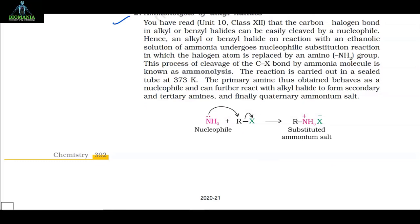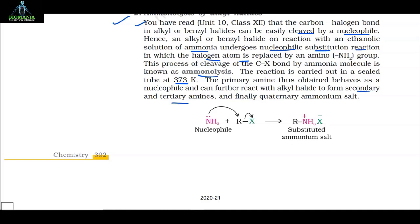Method 2: Ammonolysis of alkyl halides. The carbon-halogen bond in alkyl or benzyl halides can be easily cleaved by a nucleophile. Hence, an alkyl or benzyl halide on reaction with an ethanolic solution of ammonia undergoes nucleophilic substitution, in which the halogen atom is replaced by an amino group. This process is known as ammonolysis and is carried out in a sealed tube at 373 K. The primary amine thus obtained can further react with alkyl halide to form secondary and tertiary amines, and finally a quaternary ammonium salt.